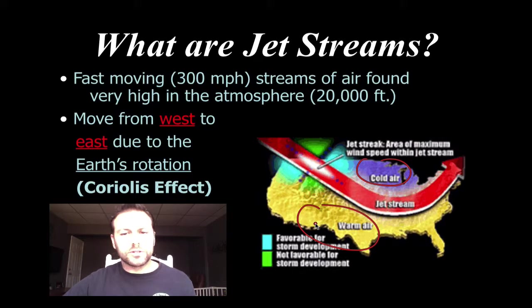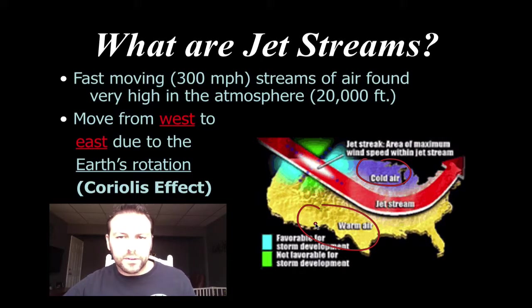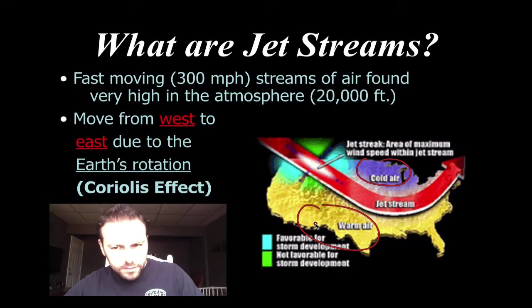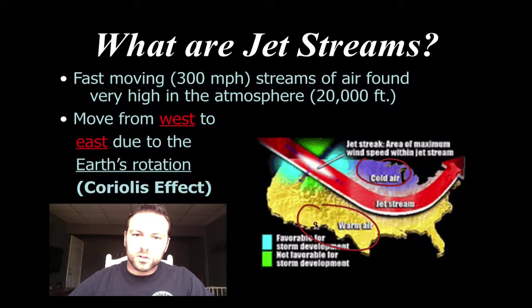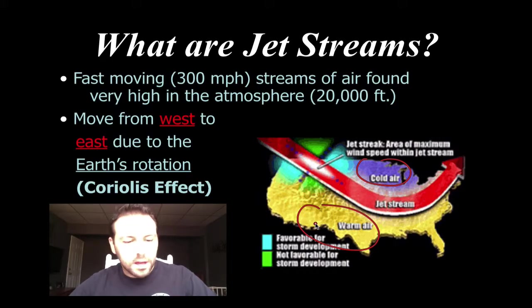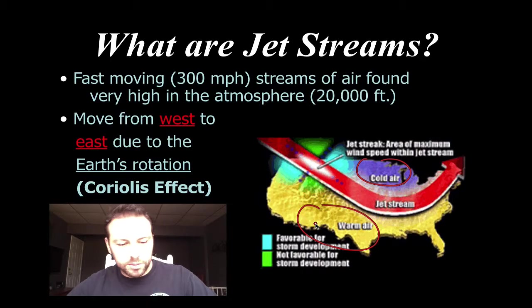So how the jet stream moves also governs how these air masses will come into and out of an area. Jet streams also have a lot to do with our flights across the United States from west to east or east to west. Associated with those flights is also turbulence, which we're going to see coming up.